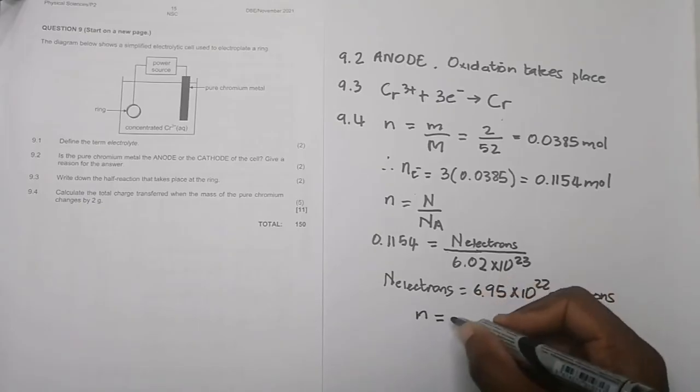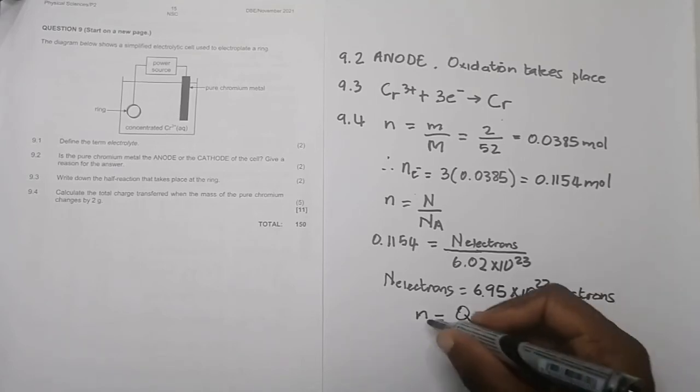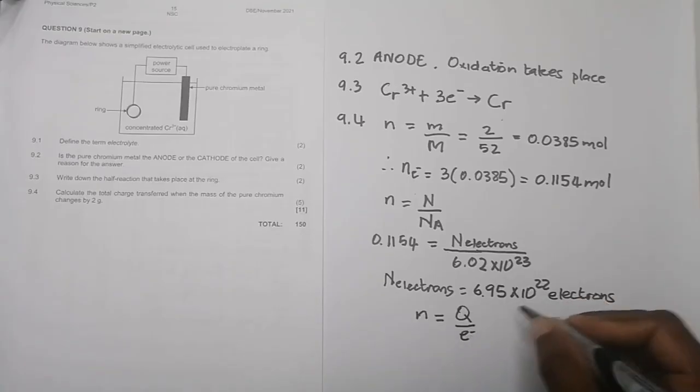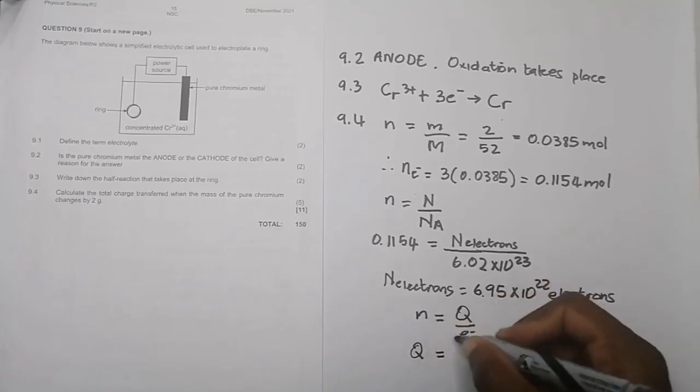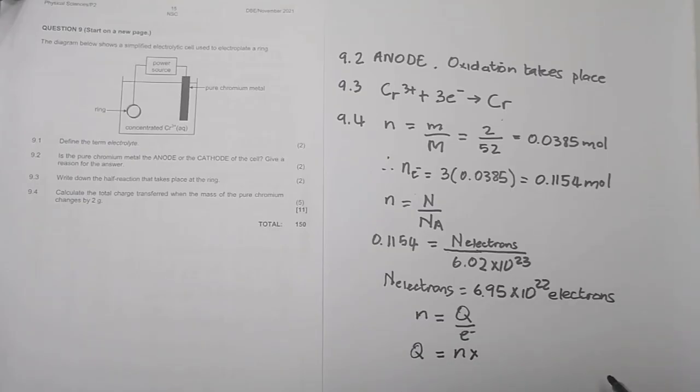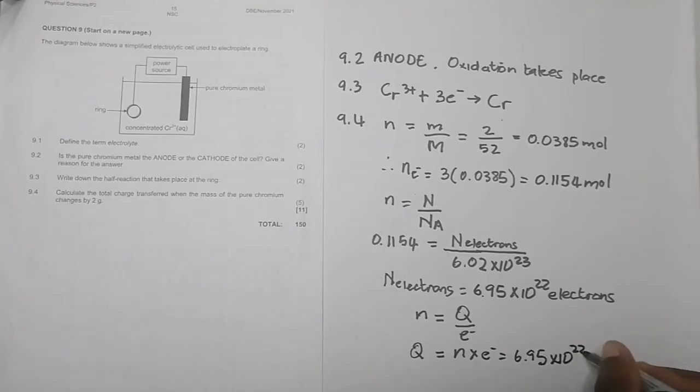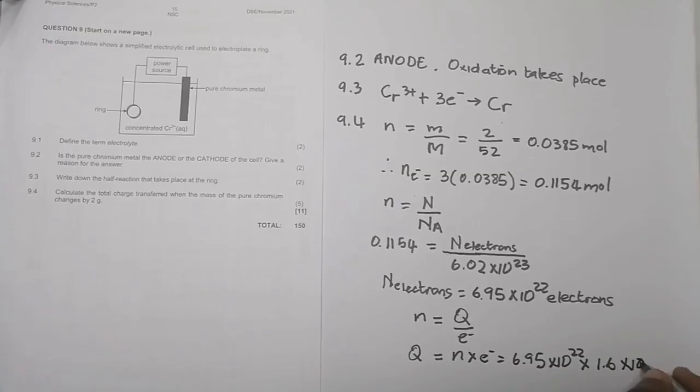But they said to calculate the amount of charge that's transferred. Remember in electrostatics when we get charge, we say it's the number of electrons times the unit charge. We have the number of electrons; we want the charge. To get the charge, we multiply: n times e, which is 6.95 × 10²² multiplied by 1.6 × 10⁻¹⁹. We're keeping this positive because we're not necessarily looking for the polarity.